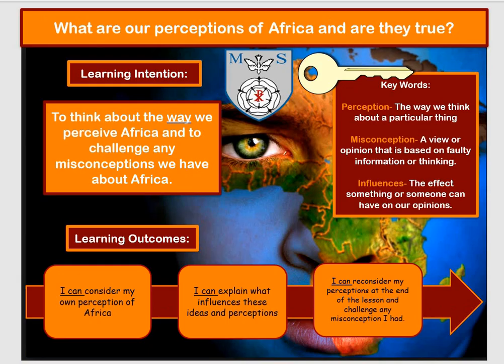Linking that to our topic about Africa, we are going to look at what our ideas of Africa are like and see if we have any misconceptions. A few key words: perception means the way that we think about a particular thing. A misconception is an idea that's wrong — faulty information or faulty thinking that gives us a false idea about something. Influences are the things that affect our opinions.